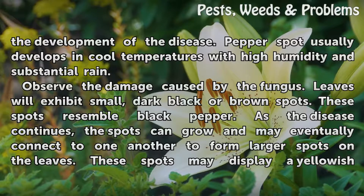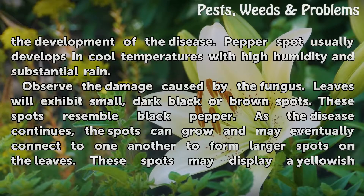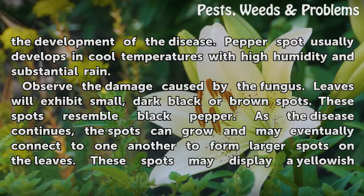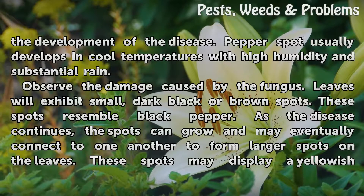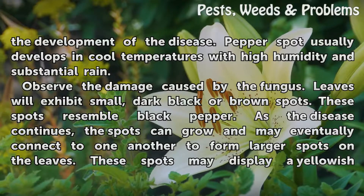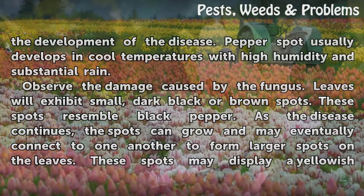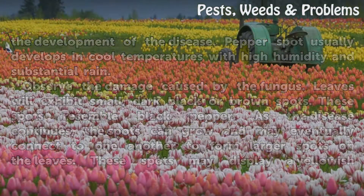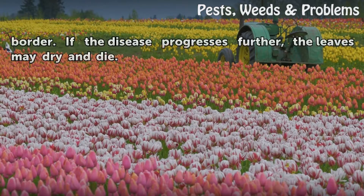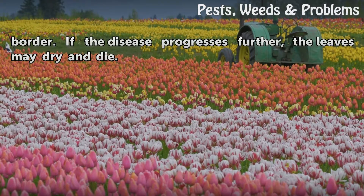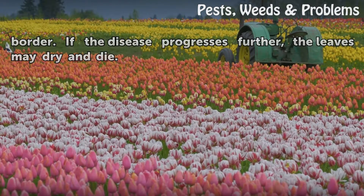Observe the damage caused by the fungus. Leaves will exhibit small, dark black or brown spots that resemble black pepper. As the disease continues, the spots can grow and may eventually connect to one another to form larger spots on the leaves. These spots may display a yellowish border. If the disease progresses further, the leaves may dry and die.